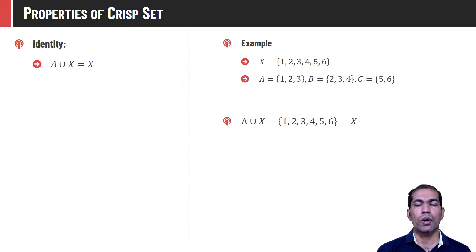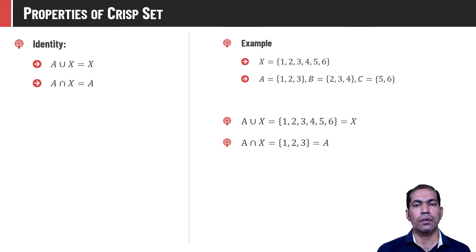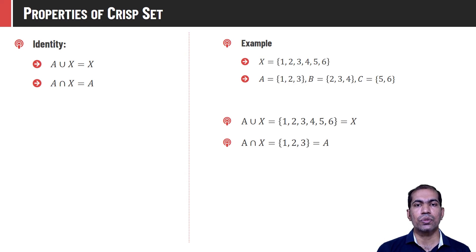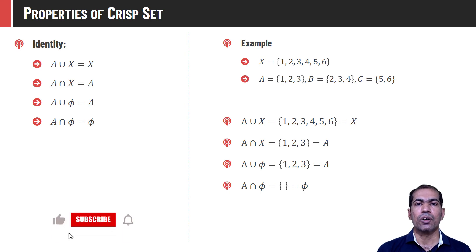Crisp sets also hold the properties of identity. A union X is always X, and A intersection X is always A, since A is a subset and X is the bigger universal set. A union phi equals A — when we take the union of the null set with any set it returns the set itself. And A intersection phi equals phi, because phi has no elements, so the intersection will also have no elements — that is null.